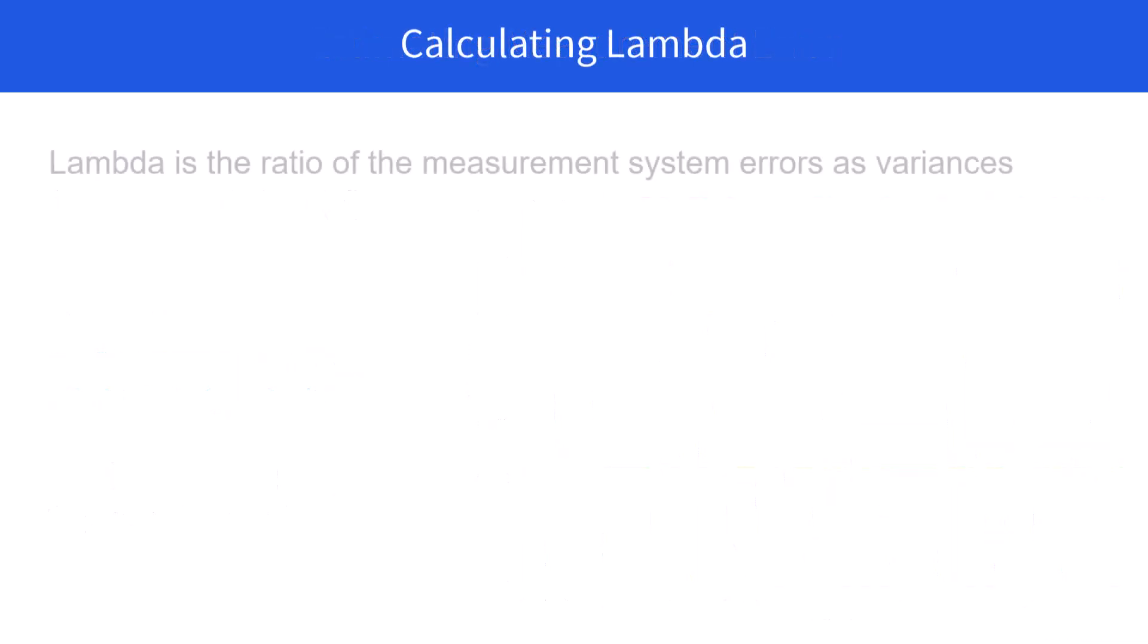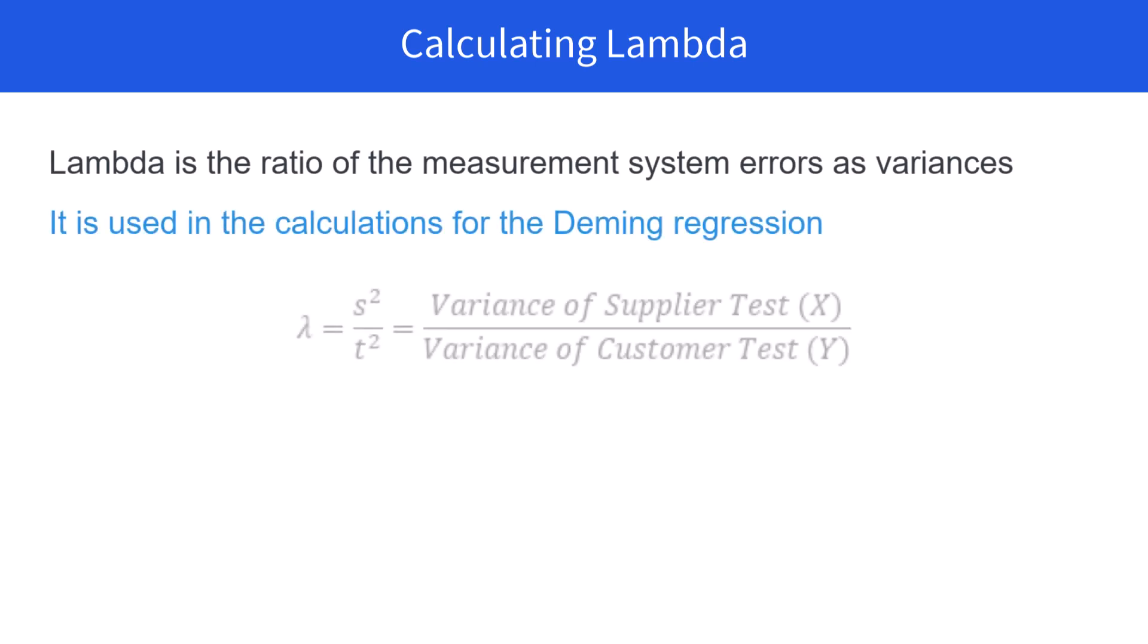Now we're going to calculate lambda. It's the ratio of the measurement system errors as variances used in the calculations of the Deming regression. So it's the variance of the supplier test divided by the variance of the customer test. In this example, it turns out to be 0.64.